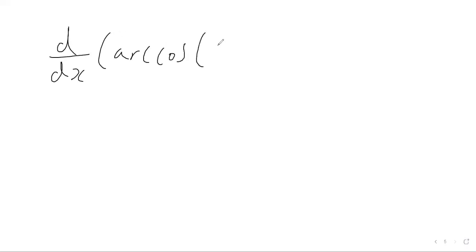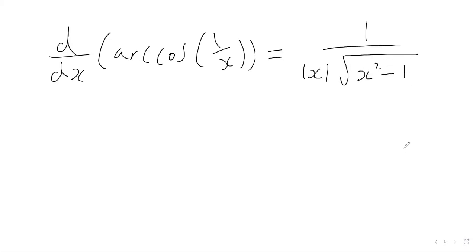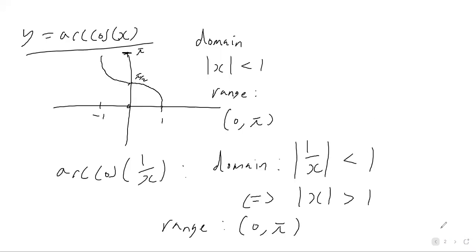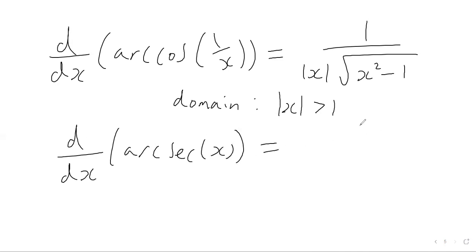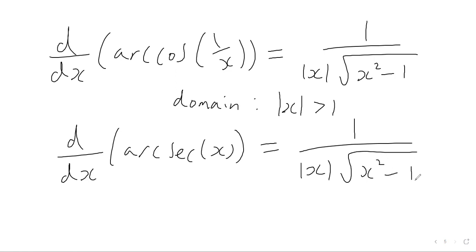So we know that when we differentiate arccos of 1 over x, we get 1 over the modulus of x multiplied by the square root of x squared minus 1, valid for the modulus of x greater than 1. If you saw the previous video, we differentiated the function arcsec of x and actually got the same result: 1 over the modulus of x multiplied by the square root of x squared minus 1.